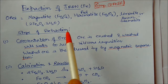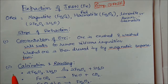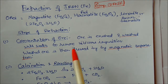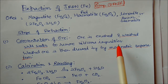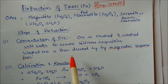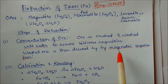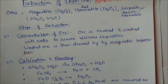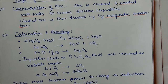The first step is concentration of ores. Generally the ores are crushed and washed with water to remove siliceous or earthy impurities. Then this washed ore is dressed by magnetic separation. The second step is calcination and roasting.